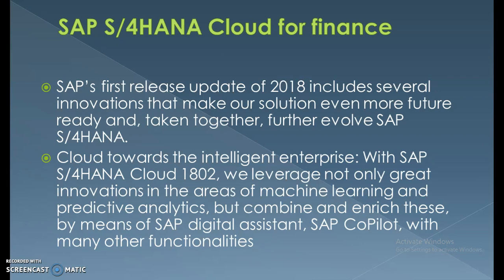SAP S4 HANA Cloud 1802 further evolves towards the intelligent enterprise. We leverage innovations in machine learning and predictive analytics, combined with the SAP Digital Assistant and SAP Co-Pilot. In previous versions, SAP Leonardo was introduced and machine learning became an active part of SAP's growth. Now we add more capabilities by associating the digital assistant and co-pilot with existing technologies in the latest SAP S4 HANA version.